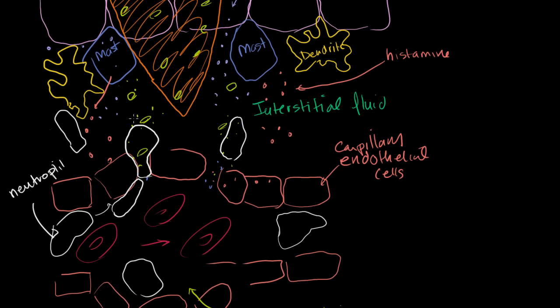At the same time, your dendritic cells, other phagocytes, they will eat up the viruses, and then they'll present them on their surfaces. And it's not just neutrophils that are coming in. Because this is an area of congestion, and all of the fluid is coming here.